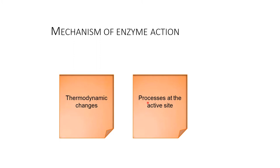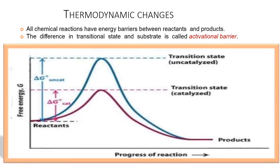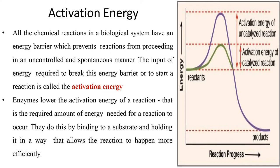One is thermodynamic changes, another one is processes at the active site. Thermodynamic changes: all chemical reactions have an energy barrier between the reactant and the product. The difference between the transitional state and the substrate is called activation energy. All chemical reactions in a biological system have an energy barrier which prevents the reaction from proceeding in an uncontrolled or spontaneous manner. The input of energy required to break this energy barrier or to start a reaction is called activation energy.